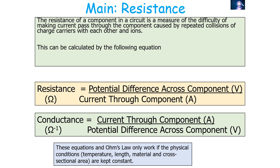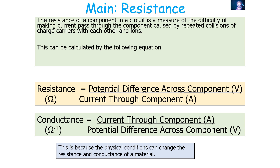These equations, and Ohm's law, only work if the physical conditions — temperature, length, cross-sectional area, and material — are kept constant, because changes in the physical conditions of a material will change its resistance and conductance.